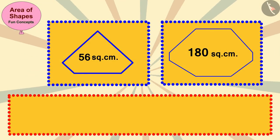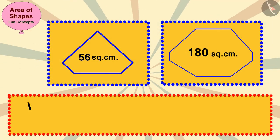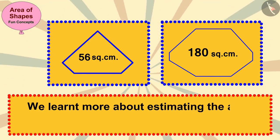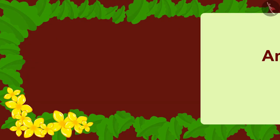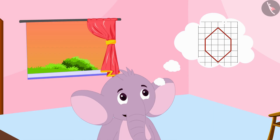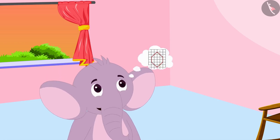Hello children! In the previous video we learned more about estimating the area of shapes. In this video we will see some fun concepts related to this. Appu sells cashew burfi in this shaped mitai box.